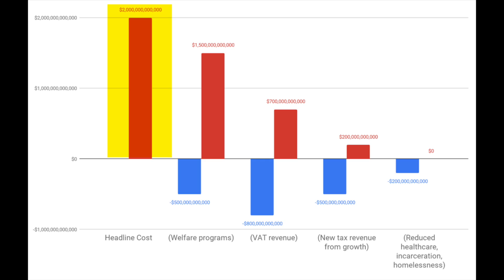You start out with the headline cost, which he calls the headline cost, which is $2 trillion a year — the same cost as the Iraq war, but paid every year. And the same cost as the Trump tax cuts, but that was over 10 years. So this is 10 times more expensive than the Trump tax cuts. Let's be real. How in the world are we going to pay $2 trillion a year, even though the economy is a $20 trillion economy?